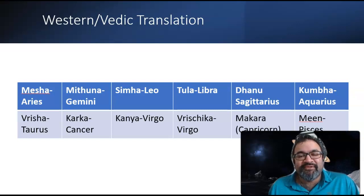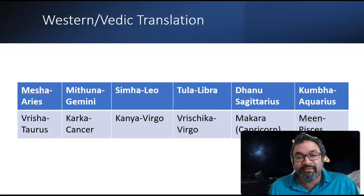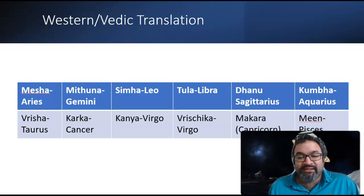There are different stories for the same sign. The next sign, Cancer, is Karka. Leo is Simha, which is associated with multiple gods and goddesses in India — the lion. The next one is Virgo, or Kanya.